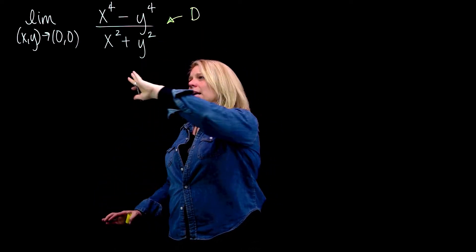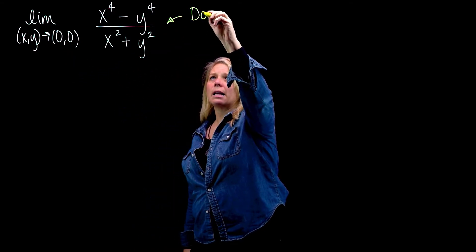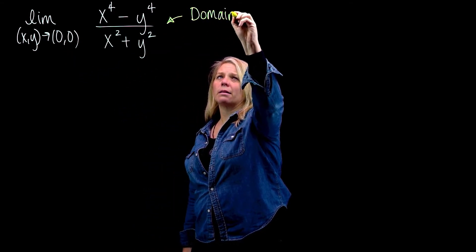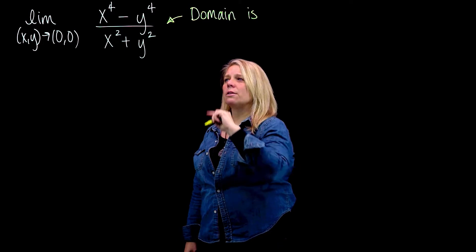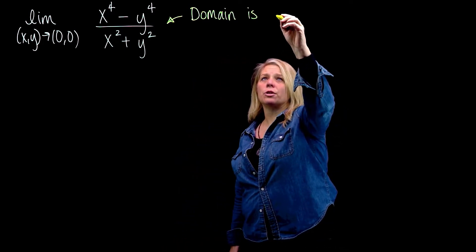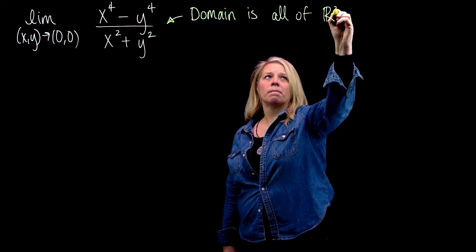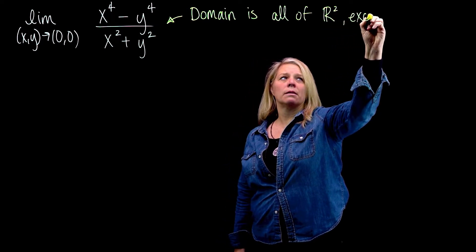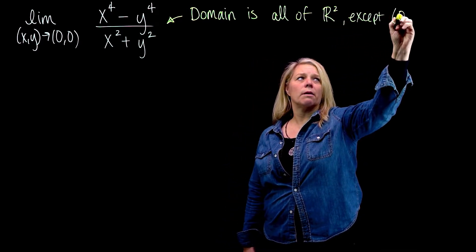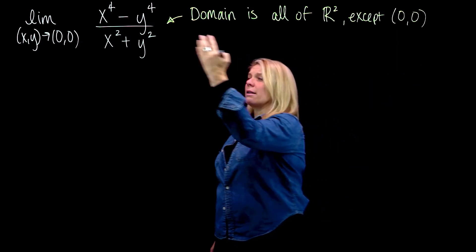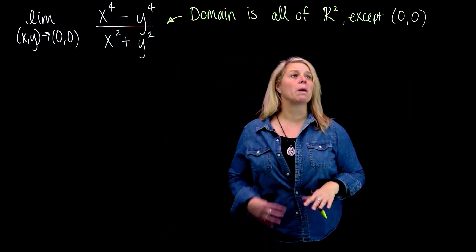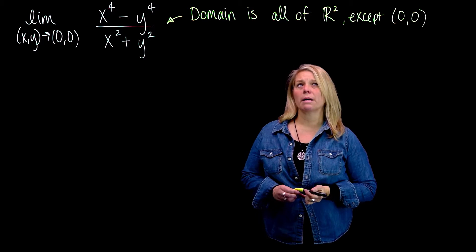That's not exactly what it's asking here, but it is relevant for thinking about this. The domain is all of R² except (0,0). Zero zero would make the denominator zero, so that's obviously not in the domain, and that's the only point at which we would have trouble.